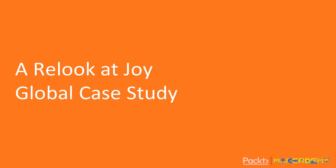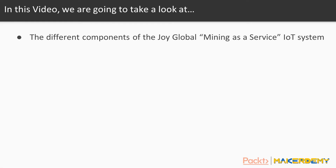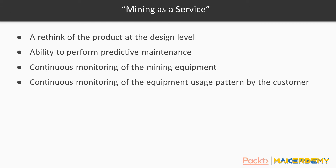To offer mining as a service through its long wall system, JoyGlobal requires the ability to remotely monitor and fix the mining system. The only way the company could offer such a commercial service is when it can continuously monitor and analyze how the equipment is used by their mining clients. JoyGlobal needs enough data from the equipment to identify potential performance failures so that they can carry out predictive maintenance activities.